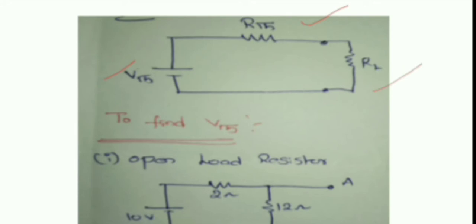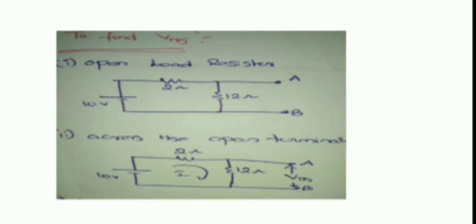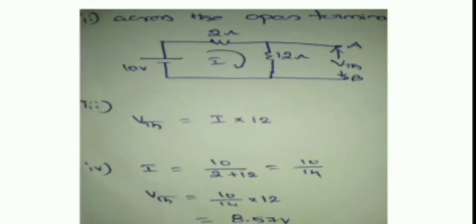To find V_Thevenin, the first step is to open the load resistor. If you open the load resistor, the circuit becomes: 10V voltage source with 2 ohms and 12 ohms. To find V_Thevenin across the terminals means finding the voltage drop across the 12-ohm resistor. The drop across 12 ohms is current multiplied by 12 ohms. The current is equal to 10 divided by (2 + 12).